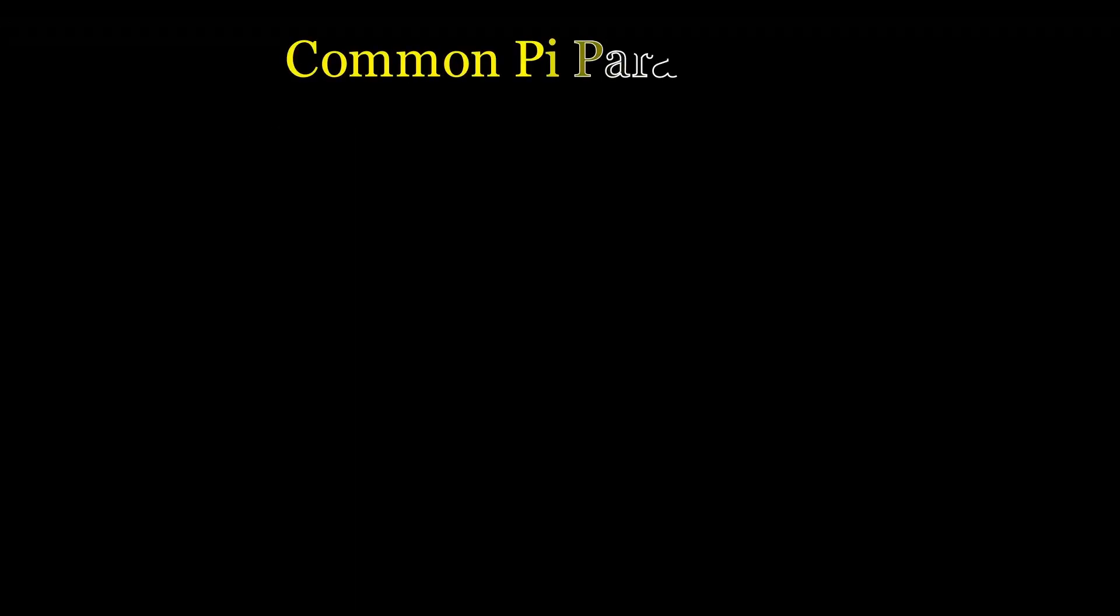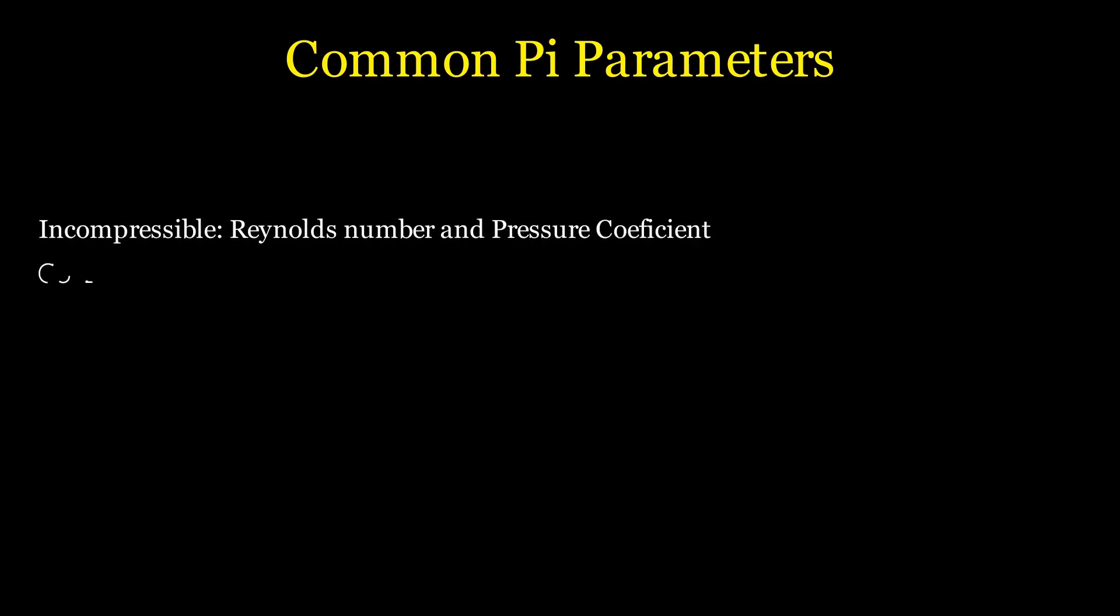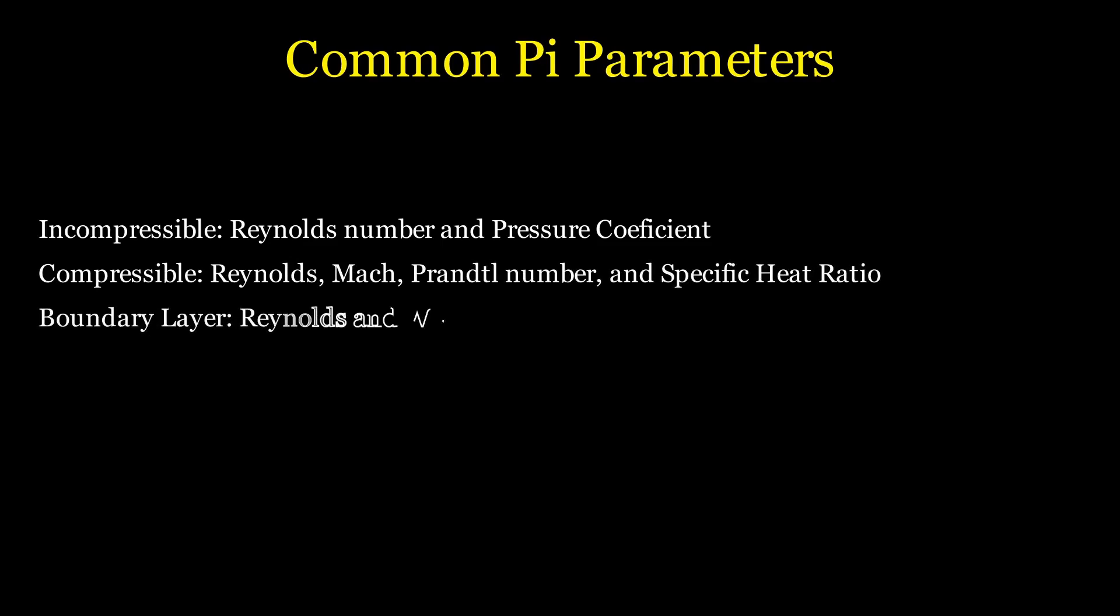The common parameters used in incompressible flow is the Reynolds number and the pressure coefficient. For compressible, it's the Reynolds, Mach, Prandtl, and specific heat ratio.